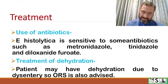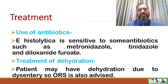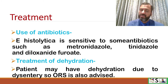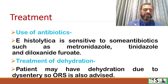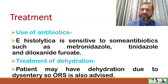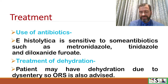What treatment is given? First is use of antibiotics. E. histolytica is sensitive to some antibiotics such as metronidazole, tinidazole, and diloxanide furoate. Along with antibiotics, dehydration treatment is done because due to dysentery and diarrhea there are chances of dehydration. The patient should be treated with ORS or, in severe conditions, IV fluids.